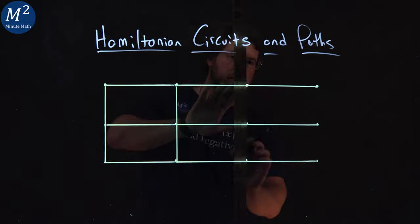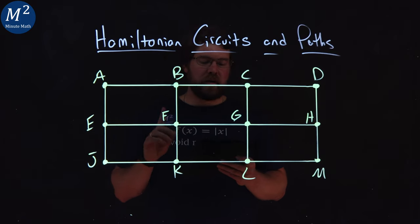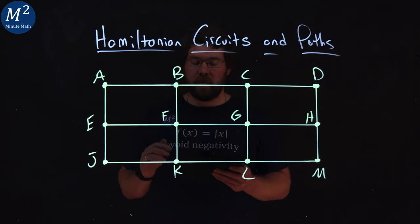Hamiltonian circuits and paths. A Hamiltonian circuit is a circuit that visits every vertex once with no repeats. Being a circuit, it must start and end at the same vertex.